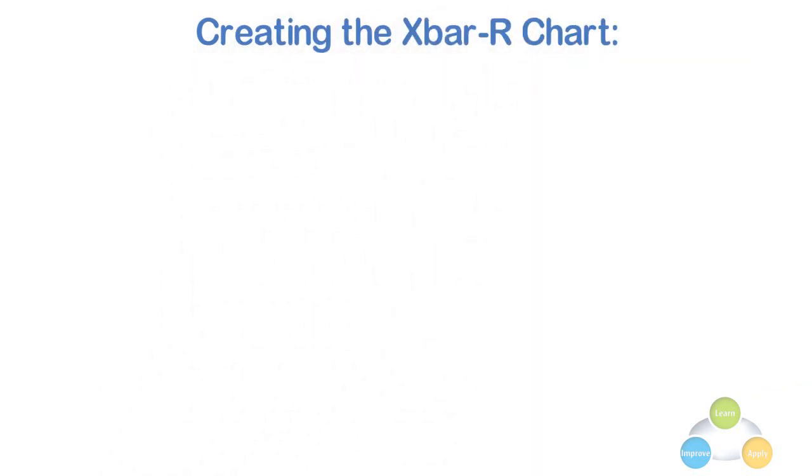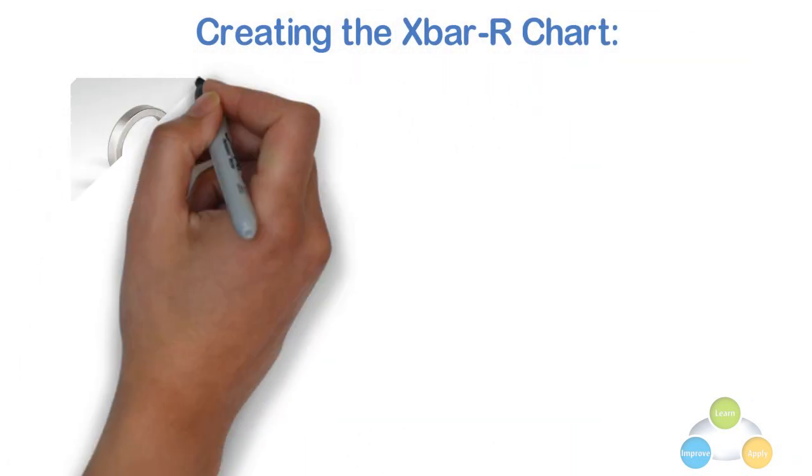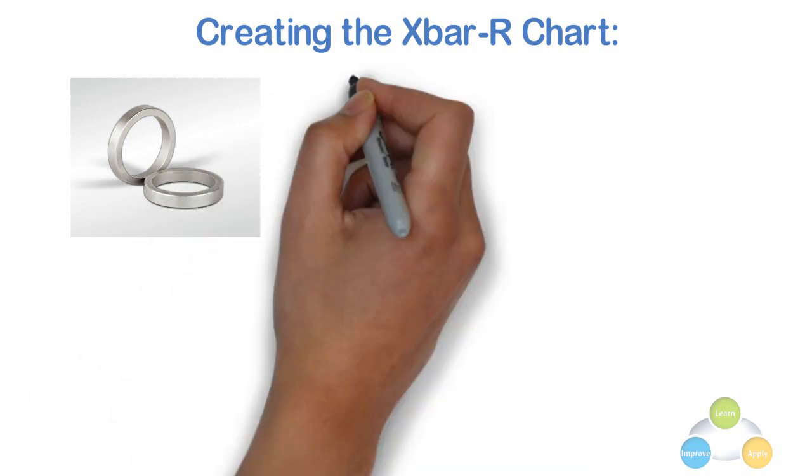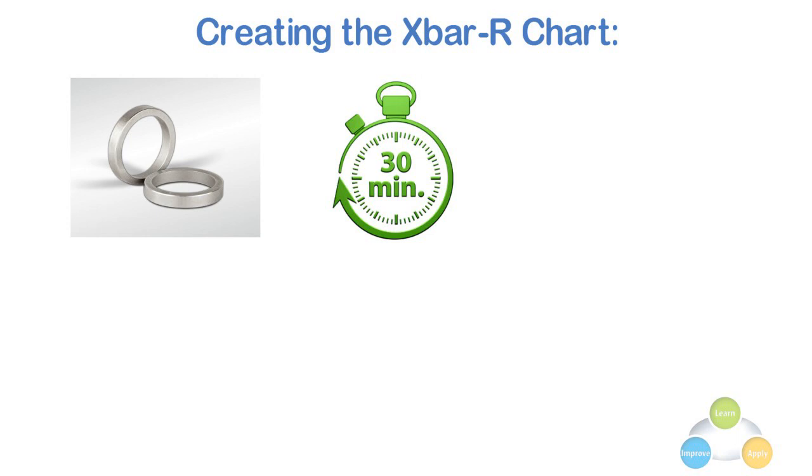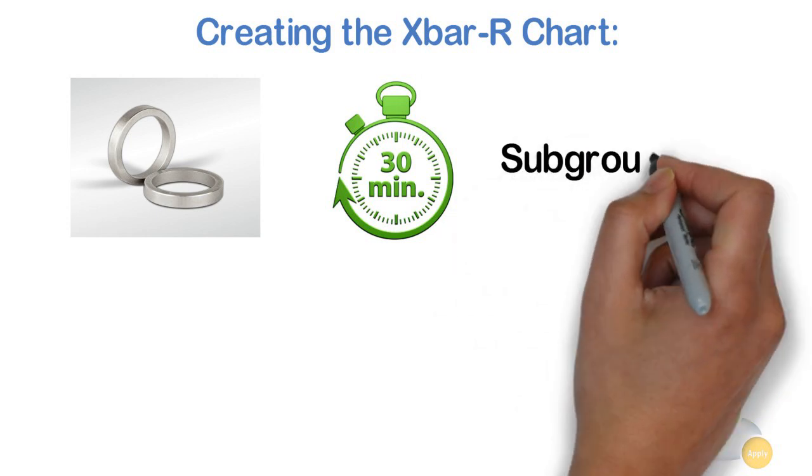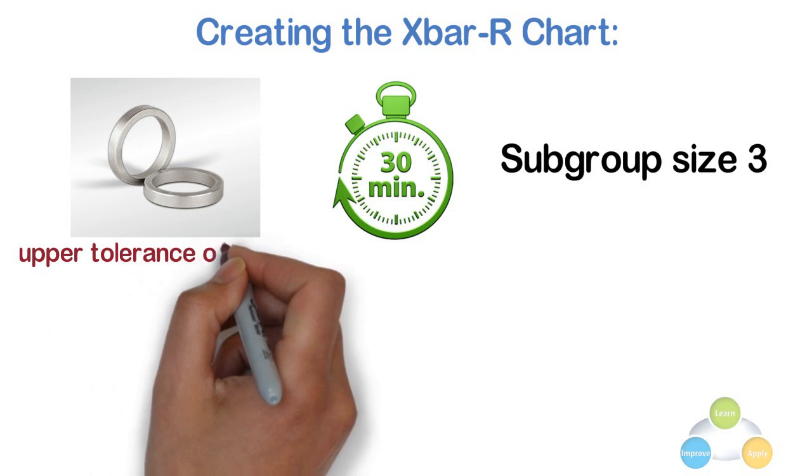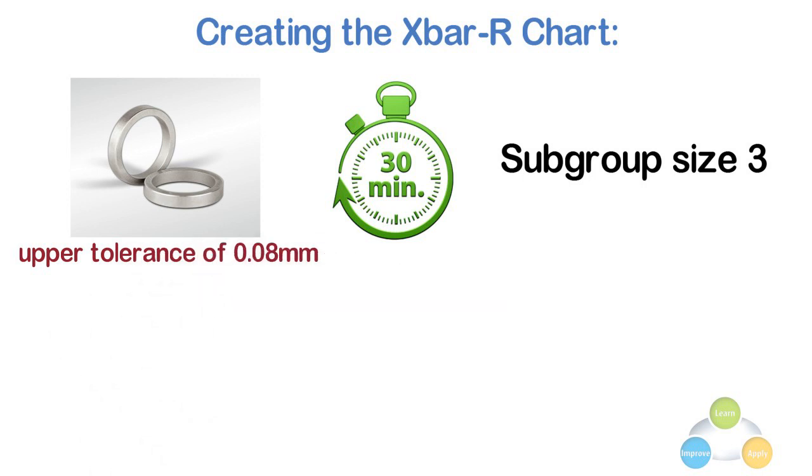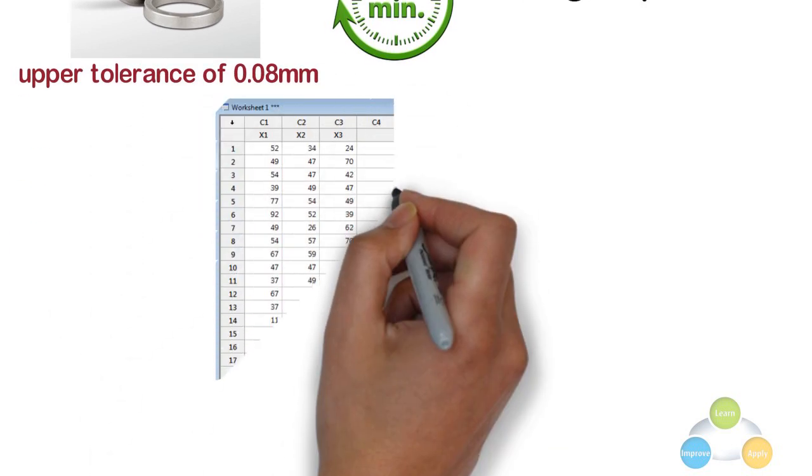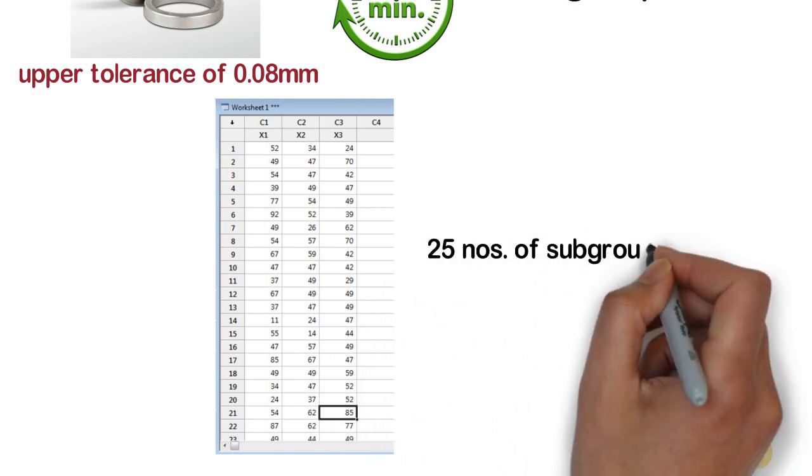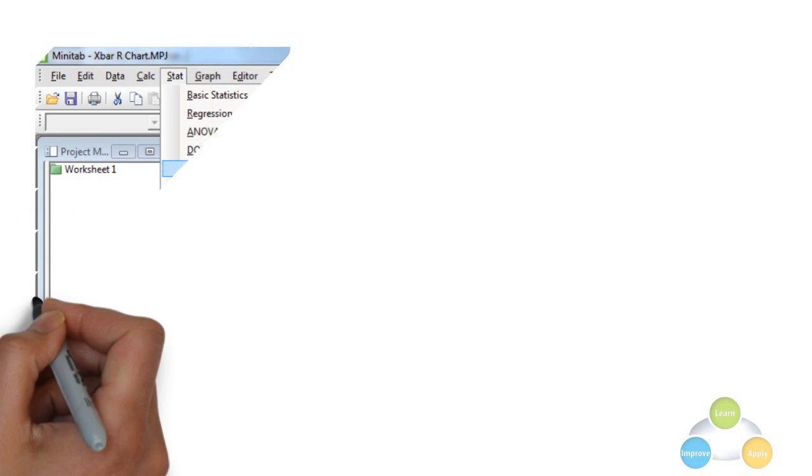Creating the X bar R chart. A company wants to monitor the run out of wall seat inserts on assembly used in cylinder heads. Data is collected at every 30 minutes with a subgroup size of 3. This wall seat insert has an upper tolerance of 0.08 mm, i.e., 80 microns. Data in microns is shown in the table below. Data is collected for 25 numbers of subgroups.